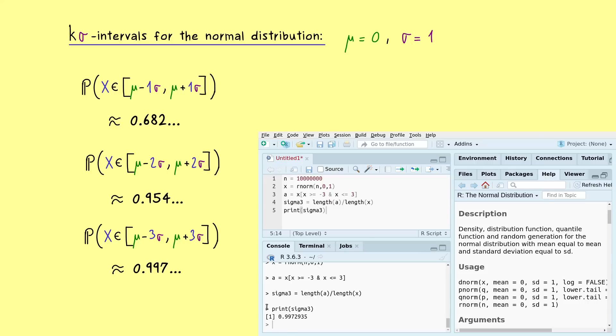Indeed, it's even better, because 99.7% are covered here. And there I can already tell you, you should definitely remember these three numbers here for the first k-sigma intervals of the normal distribution. Especially in statistics, these numbers come in again and again.